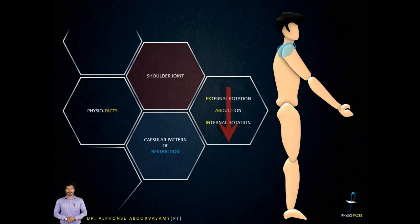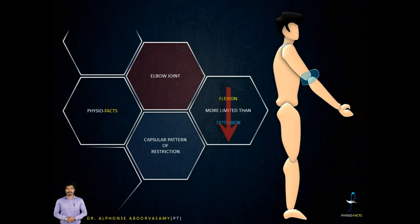For example, in the shoulder joint, the capsular pattern of restriction is: external rotation most affected, abduction moderately affected, and internal rotation less affected. In the elbow joint, flexion will be more limited than extension. For instance, if the elbow normally gives 150 degrees of flexion, once the capsule is involved, the patient may get only about 110 degrees of flexion and approximately 30 degrees of extension lag — meaning flexion is more involved than extension.